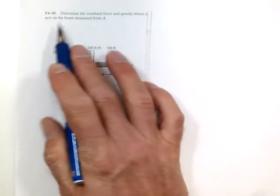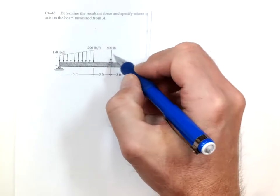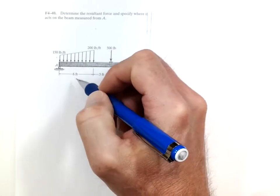Determine the resultant force and specify where it acts on the beam A. So we have a point load and a distributed load, which is a trapezoid in shape.